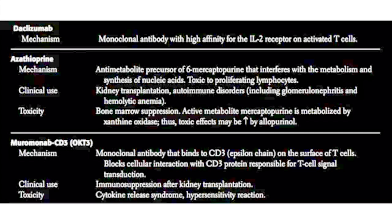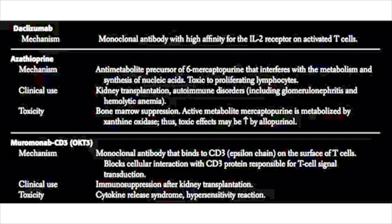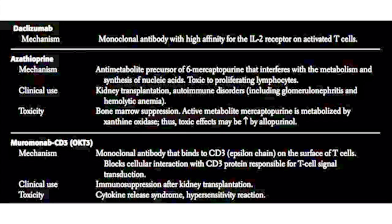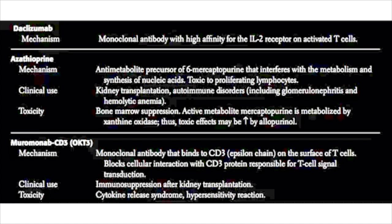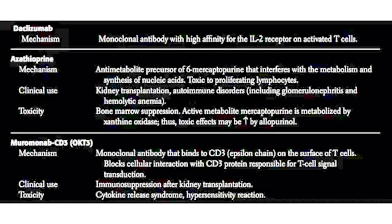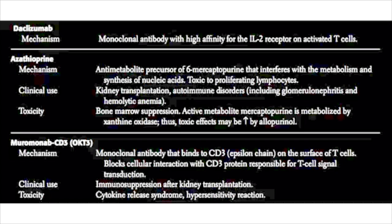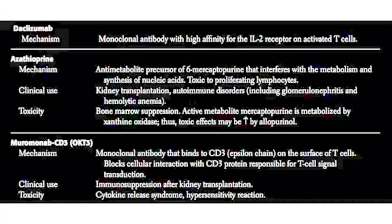Azathioprine is usually used for kidney transplants and is sometimes used for autoimmune disorders such as glomerulonephritis, hemolytic anemia, or Crohn's disease. Major toxicity is bone marrow suppression — it is really important to monitor the white blood cell count. The active metabolite, mercaptopurine, is metabolized by xanthine oxidase, which is the molecule inhibited by allopurinol. So if a patient is taking both allopurinol and azathioprine, huge amounts of the drug can accumulate. You want to avoid azathioprine in any patient on allopurinol for gout.